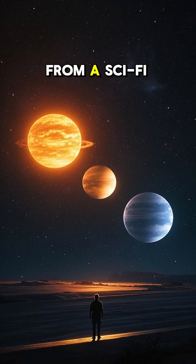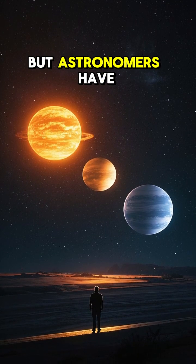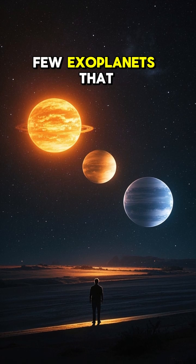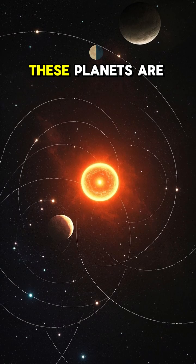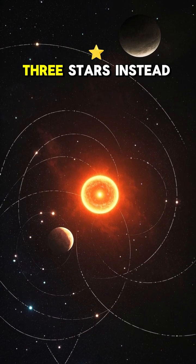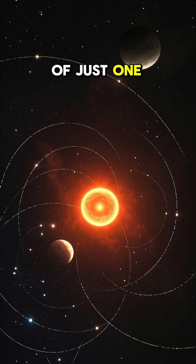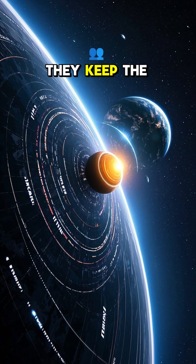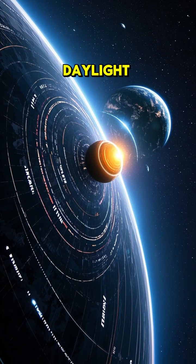It might sound like a scene from a sci-fi movie, but astronomers have actually found a few exoplanets that have three suns. These planets are in systems with three stars instead of just one. And because the orbits are so complex, they keep the planets in a state of constant daylight.